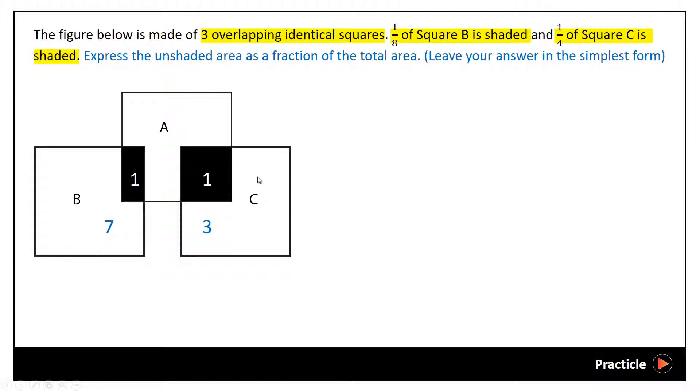First of all, remember that the question said that the 3 squares were identical. So why do I have a total of 8 parts for square B and a total of 4 parts for square C? Something is weird, right? So we know that something has to be done to make the areas the same.